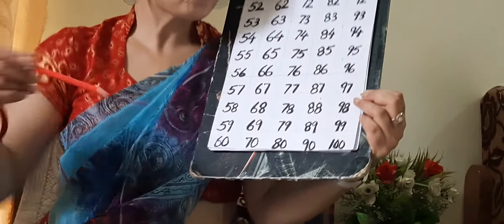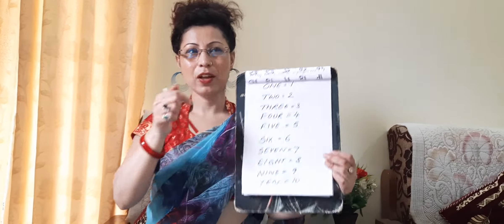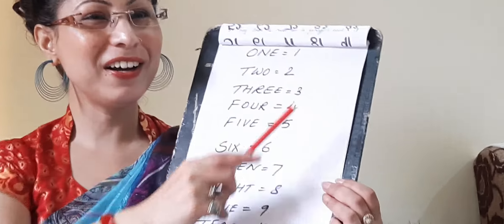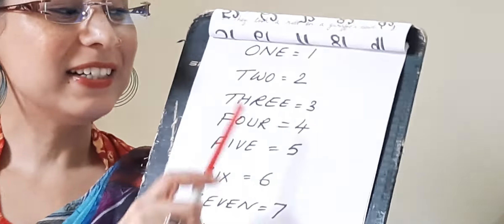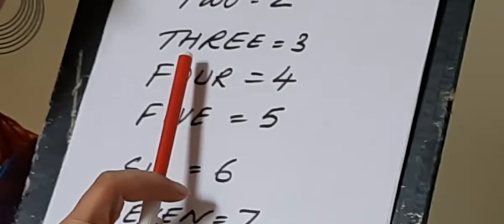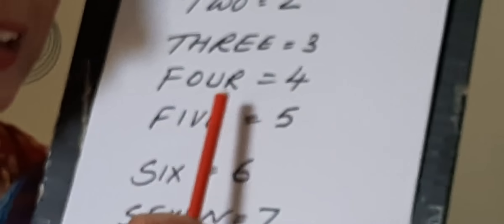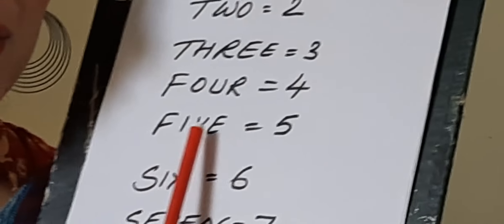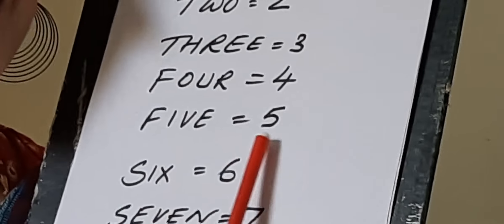And now let's quickly move to the spelling of the numbers. O-N-E, 1. T-W-O, 2. T-H-R-E-E, 3. F-O-U-R, 4. F-I-V-E, 5. S-I-X, 6.